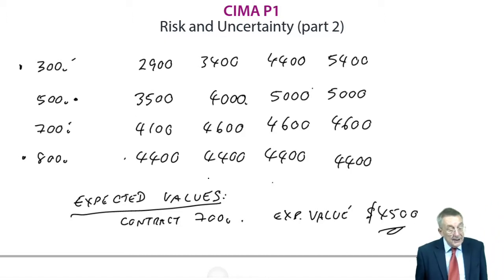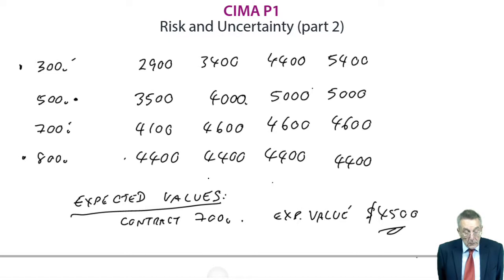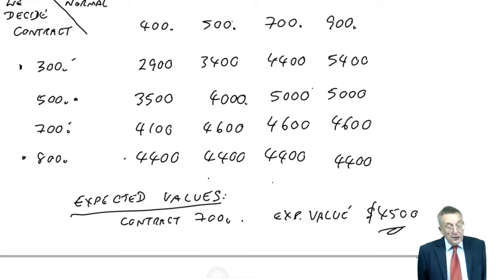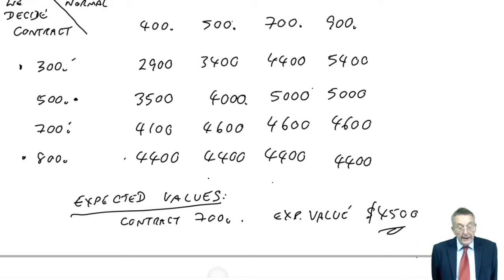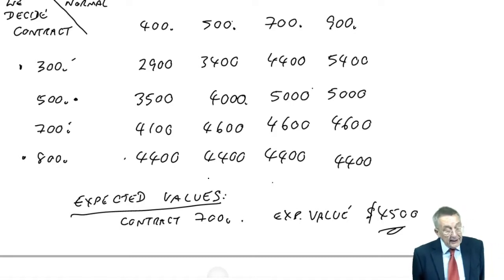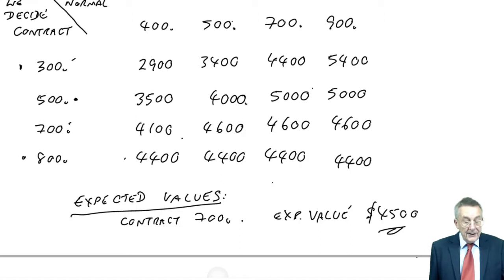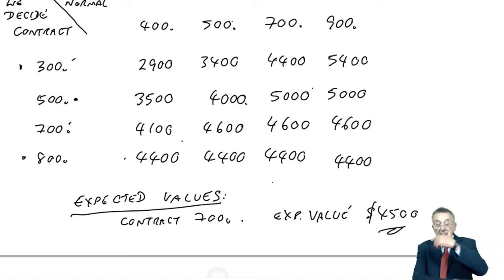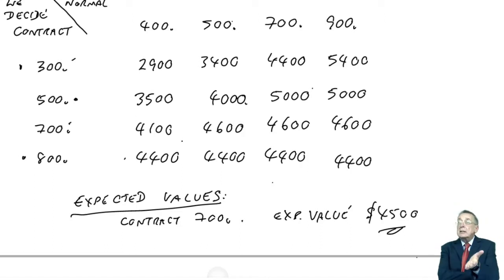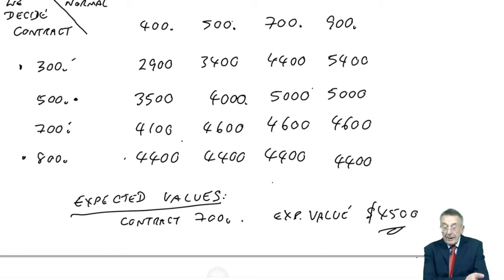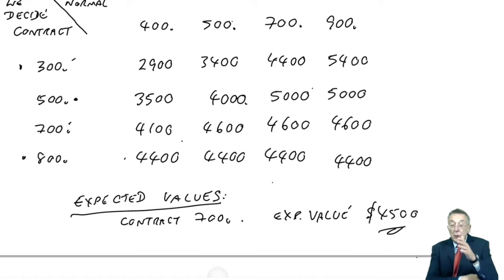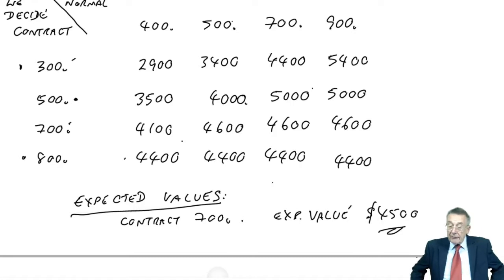Now let's read part C. It says: what is the most that John would be prepared to pay in order to obtain perfect knowledge as to the level of demand? In part A, we had no idea what the demand was going to be. We knew it would be 4, 5, 7, and 9 hundred, and therefore we had lots of possible outcomes.